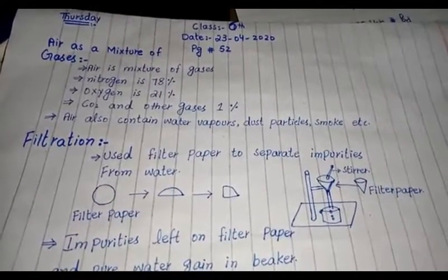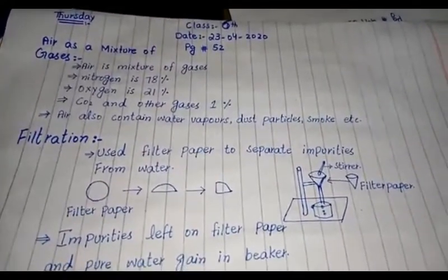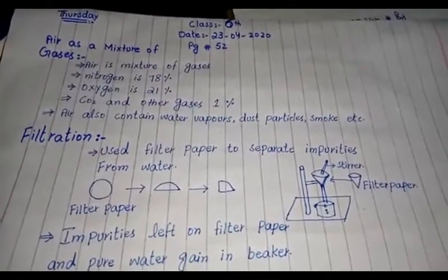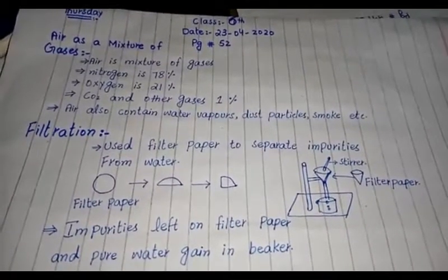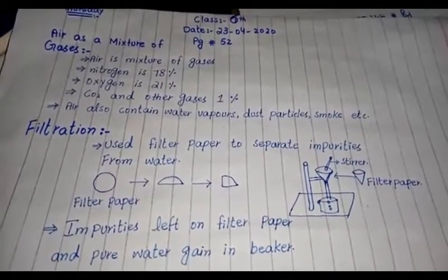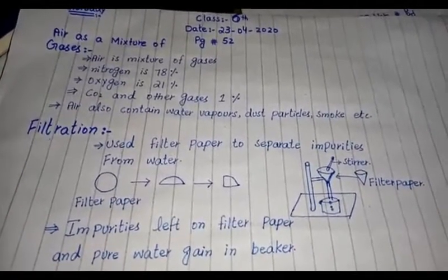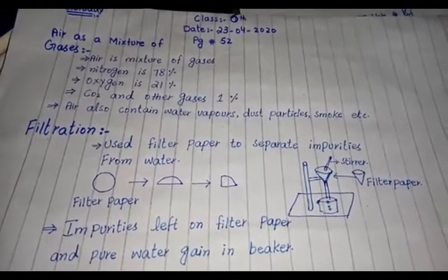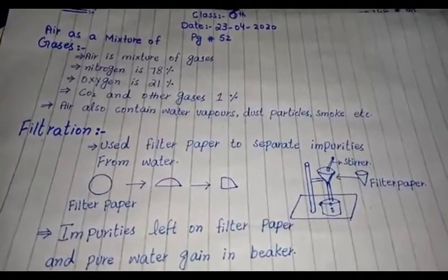Nitrogen is the largest component in the air and it makes up 78% of the air. Oxygen is 21% in the air, and carbon dioxide and other gases make up 1% in the air.